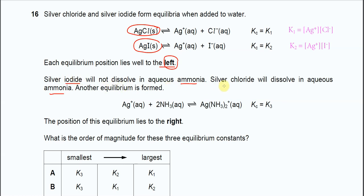Since the solubility of the silver chloride is relatively higher, the concentration of the ions will be higher than the silver iodide. This means the silver ion and chloride concentration is higher, so K1 is relatively higher than K2.